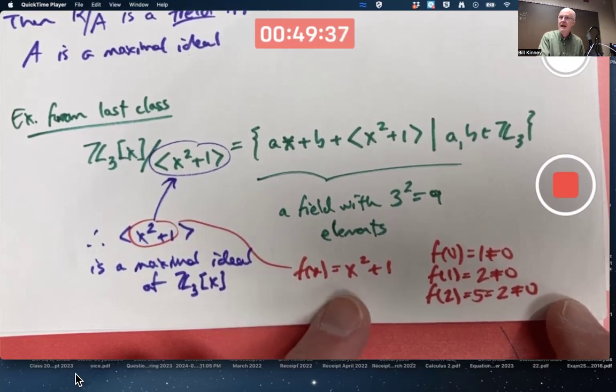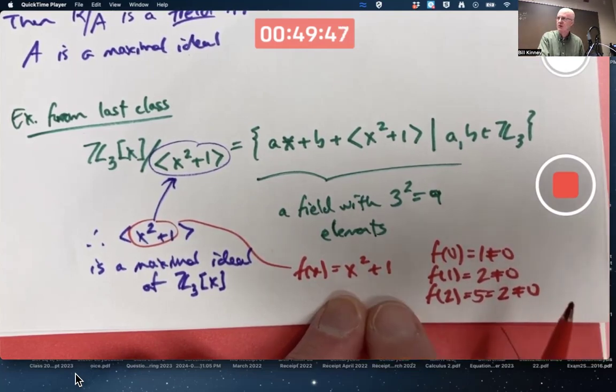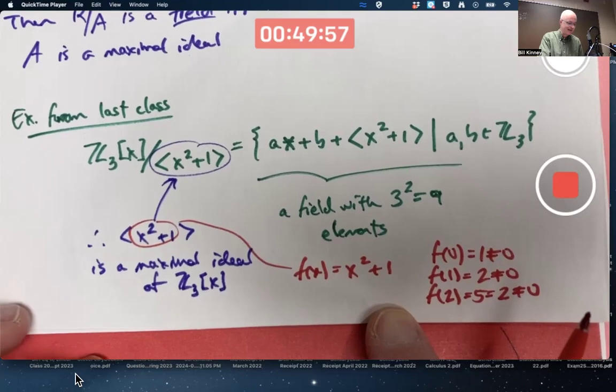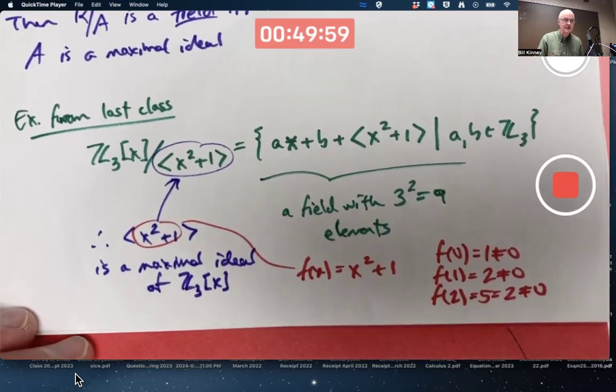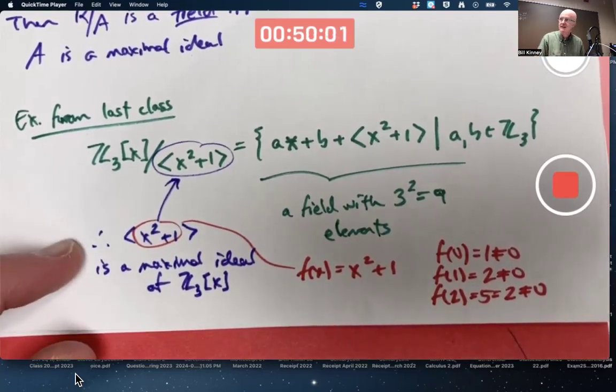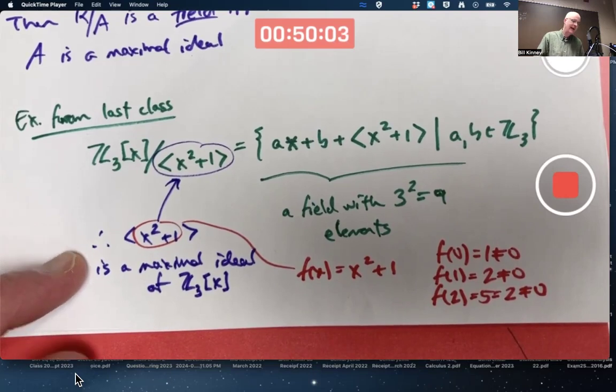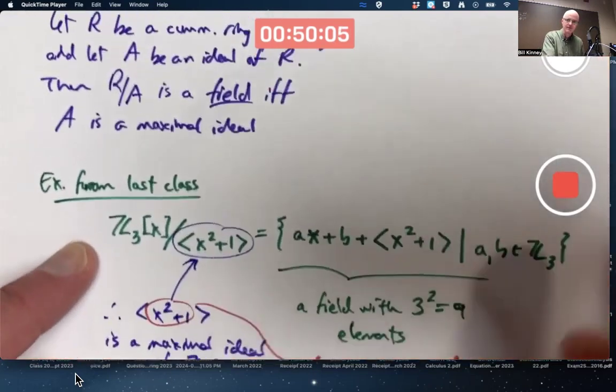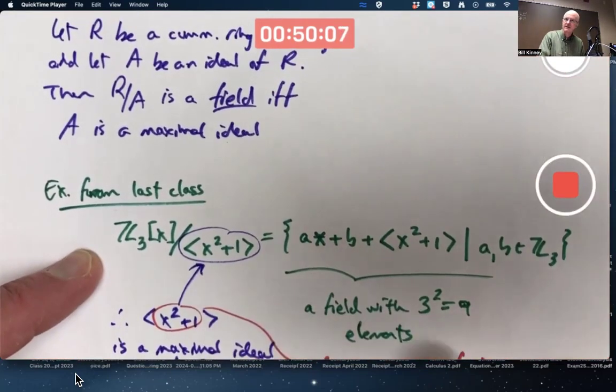I can't factor this as a product of linear polynomials. Remember that I said our main application of ring theory is to understanding factoring of polynomials? This is getting towards that. It's called irreducible over Z3. You can't factor it as a product of lower degree polynomials in Z3[x]. Because of that, that's why we'll see in chapter 17, this is a maximal ideal. Which comes back to that's why then by this theorem, this has got to be a field.